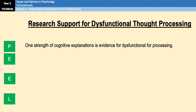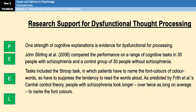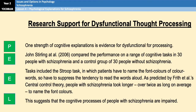Moving on to evaluation points for the cognitive explanations: there is research support for dysfunctional thought processing by John Sterling et al. in 2006, who compared the performance on a range of cognitive tasks in 30 people with schizophrenia against a control group. The tasks included the Stroop task, where patients have to name font colours of colour words and suppress the tendency to read the words aloud. As predicted by Frith's central control theory, people with schizophrenia took longer to name the font colours, suggesting that cognitive processes in people with schizophrenia are impaired.